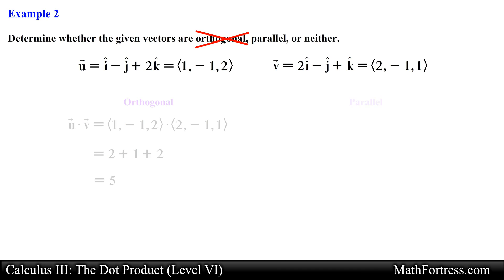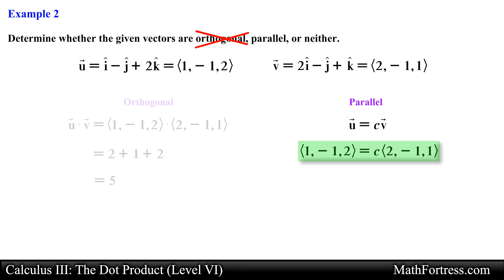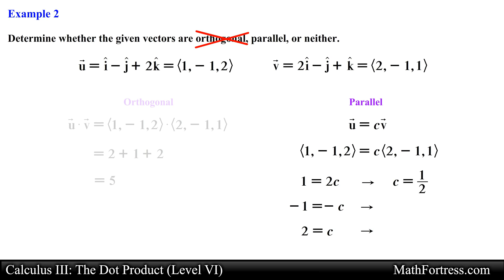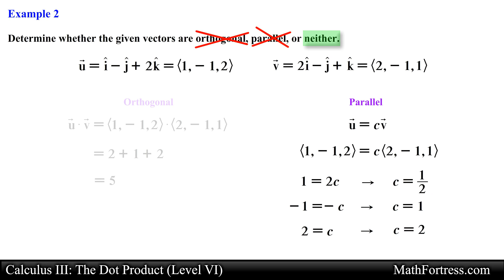Next let's check if the vectors are parallel. Recall that two vectors are parallel if they are a scalar multiple of one another. We set up a vector equation and break it into three separate equations using each of the vector's components, then solve for the scalar c. We need all three equations to have the same value of c for the vectors to be parallel. Looking at the results, this is not the case, so we conclude these two vectors are neither parallel nor orthogonal.